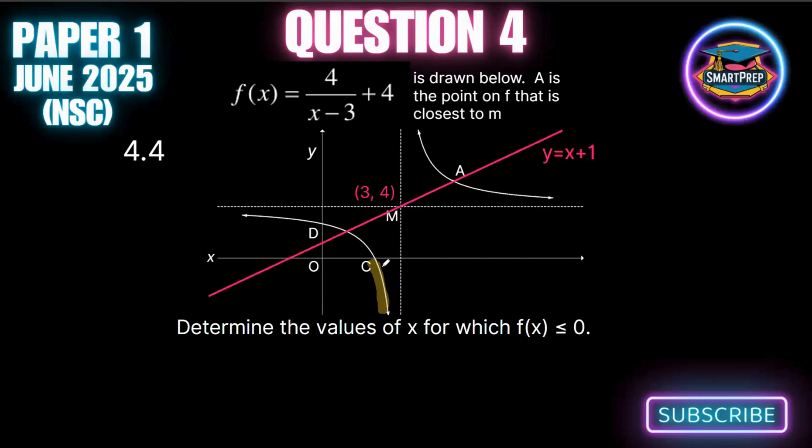For this we need to figure out what C is by making—this is the x-intercept, so we make y equals 0. We have 4 over x minus 3 plus 4, make y equals 0. Take the 4 across: negative 4 equals 4 over x minus 3. Cross multiply: negative 4 times (x minus 3) equals 4. Negative 4x plus 12 equals 4. Negative 4x equals negative 8, so x equals 2.